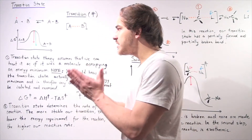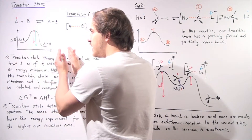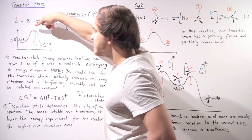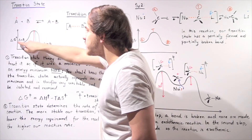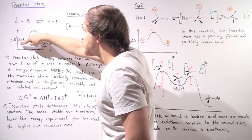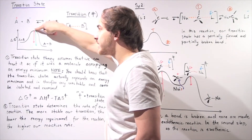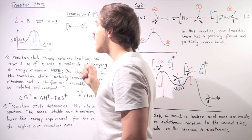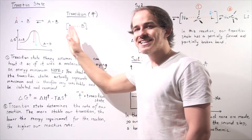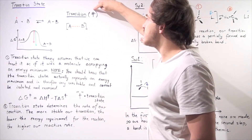What's actually happening in between? In between reactants and products is this energy maximum — the tip of this mountain on the energy curve. This is the highest point of energy on the diagram, and it is known as our transition state, represented by the double-dagger symbol ‡.